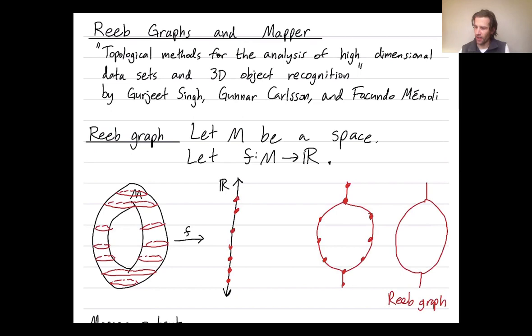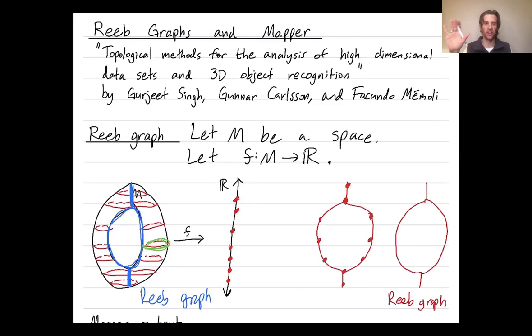You can also draw the Reeb graph in the picture on the right. The Reeb graph encodes some, but not all, of the topological features or holes in our space M. The torus has, in some sense, two holes: the blue hole going around one way, and the green hole going around the other. This Reeb graph encodes only the blue hole, but not the green hole, and that's dependent on which filtering function — which function F — you choose. So you can think of a Reeb graph as measuring some of the holes of your space, namely those seen by your real-valued function F.